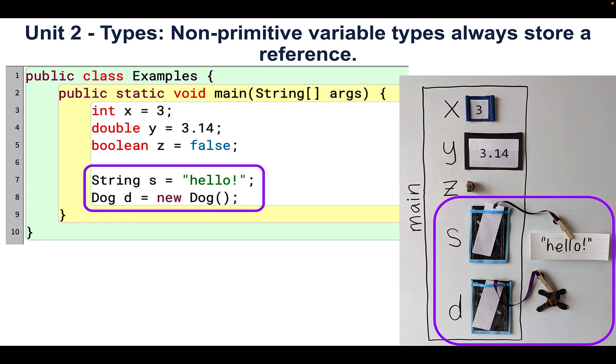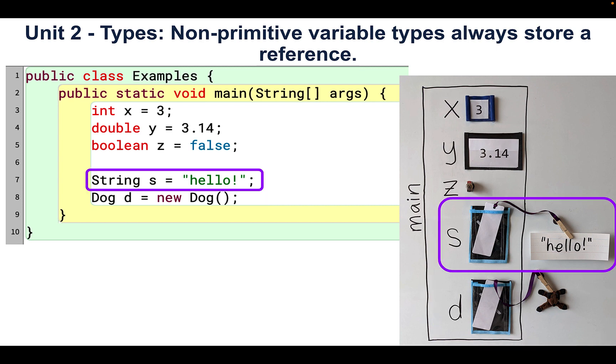Our code creates two reference variables, s and d. s is a variable of type string, which means it can store a reference to a string object. s stores a reference to the string hello. That is, s keeps track of the string hello.